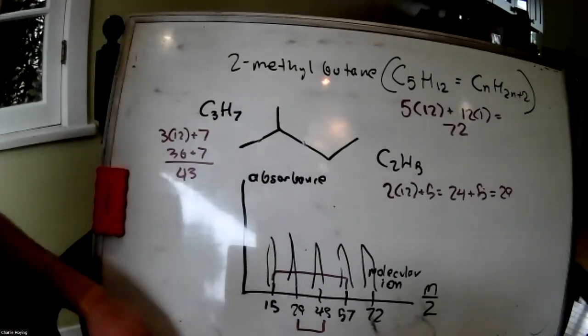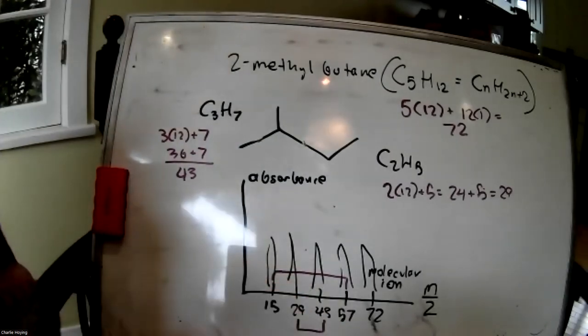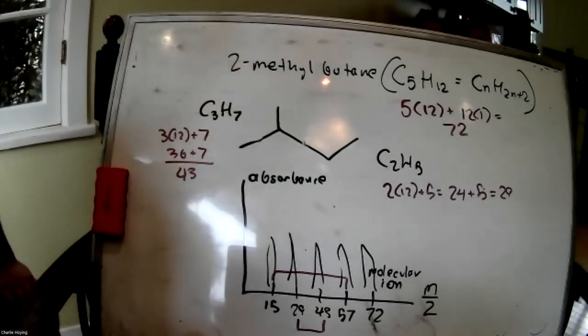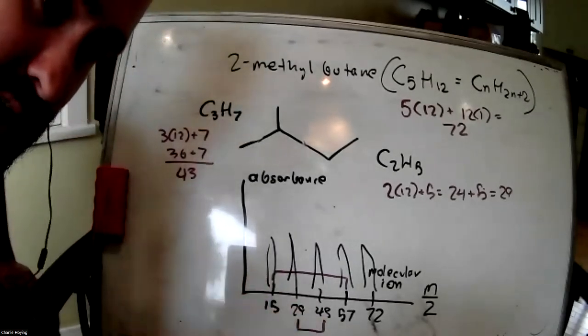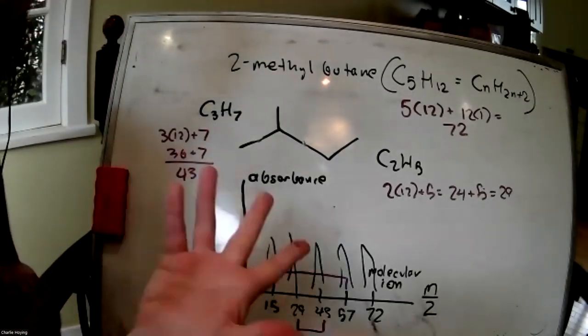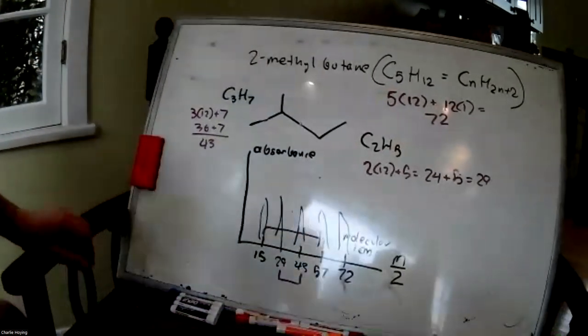Most of the time, mass spec on the MCAT will be this electron-based type. You may have seen other types of mass spec in practice passages — there might be another type in an AAMC section bank as well. They can definitely change things up by using different kinds of mass spec. For instance, there's a UWorld passage where instead of firing electrons, you fire protons. And here's the actual mass spec pattern for 2-methylbutane found online.